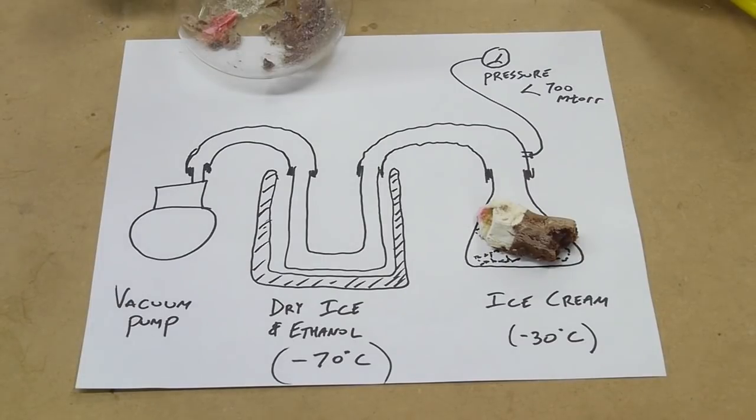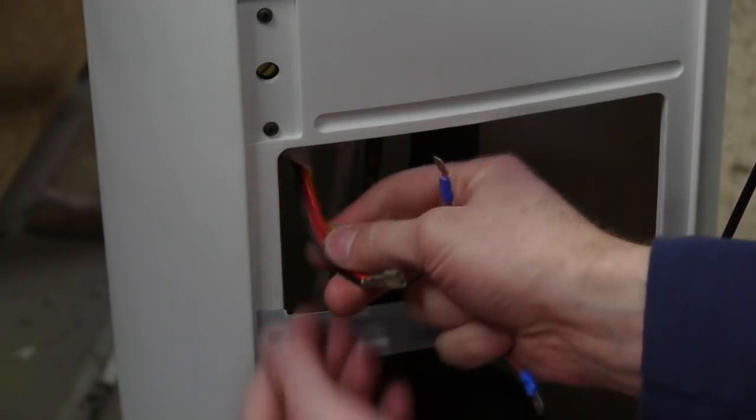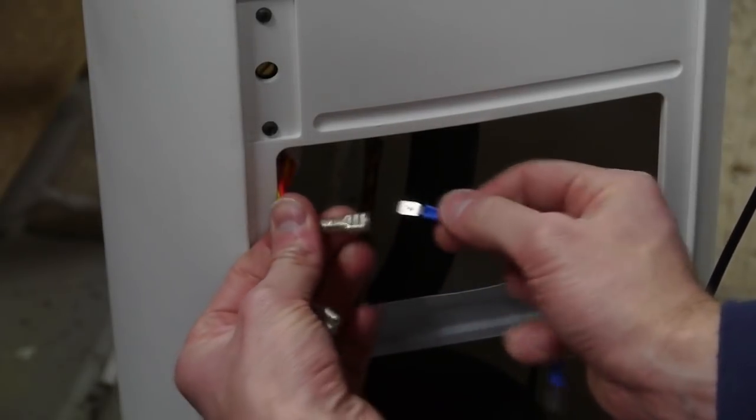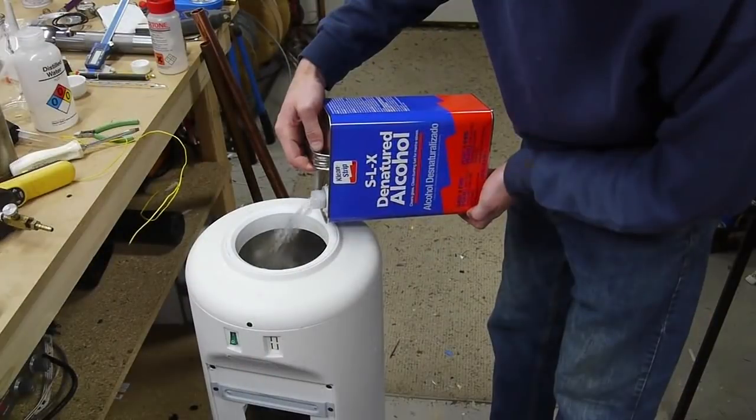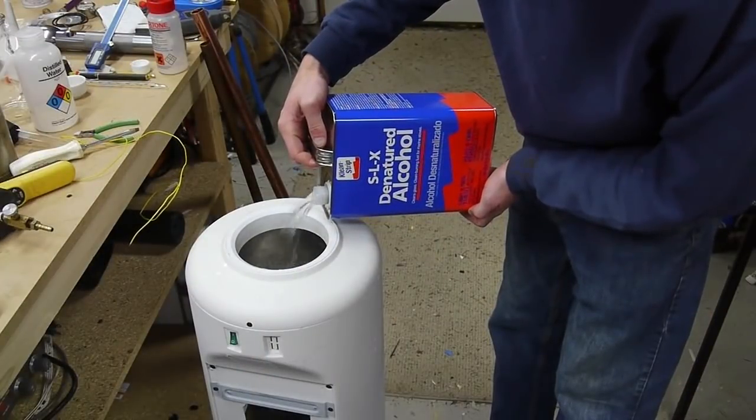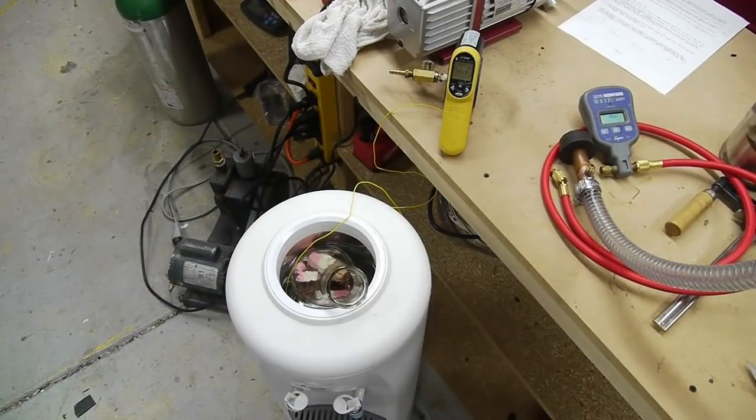The first step in this process is to make sure that the ice cream is really solidly frozen. I modified a standard water cooler by shorting or bypassing its temperature sensor so that the compressor would run all the time.